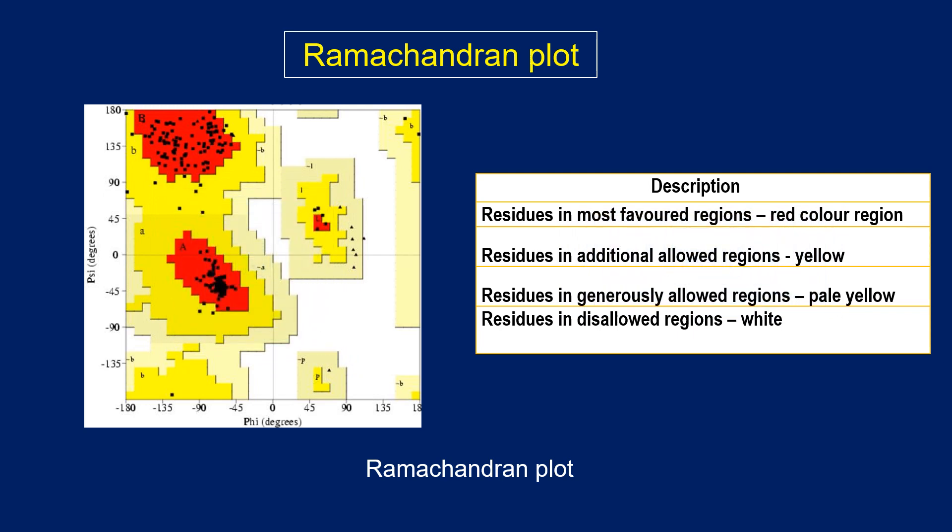The Ramachandran plot, also known as the RC plot, has four quadrants. The residues of the protein can be seen in these regions: most favored regions shown in red, additionally allowed regions in yellow, and generously allowed regions in pale yellow. The white region is the disallowed region — residues in the model structure can be present in the red, yellow, or pale yellow zones, but they should not be present in the white zone.